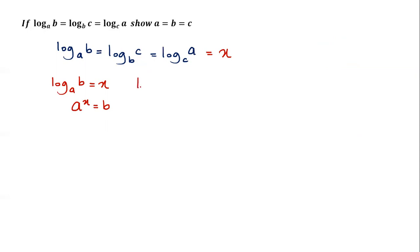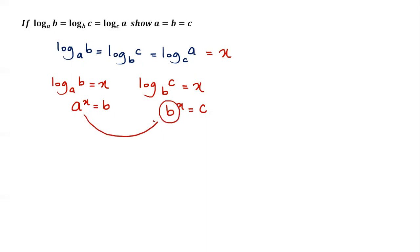Next, log_b(c) = x. Switching gives b^x = c. Now, b is already known from the first equation — b equals a^x — so substituting gives (a^x)^x = c, which means a^(x²) = c.